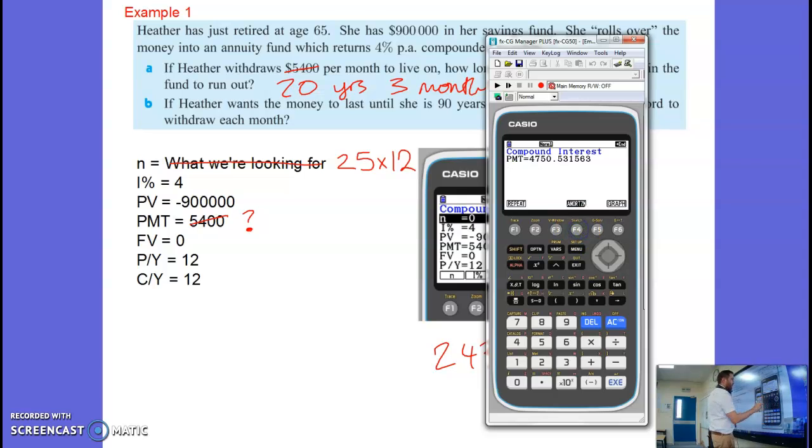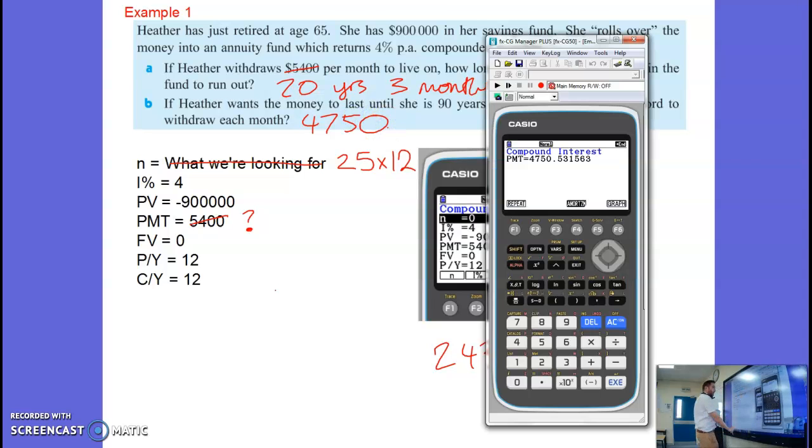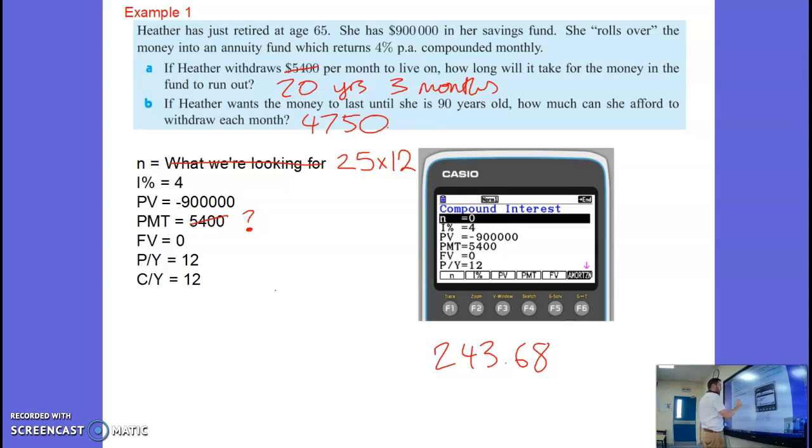So let's do that. PMT. Here we go. 4,750.53. Usually two decimal places with money, unless it tells you otherwise. So that is how much money she would be able to withdraw if she wanted it to last 25 years.